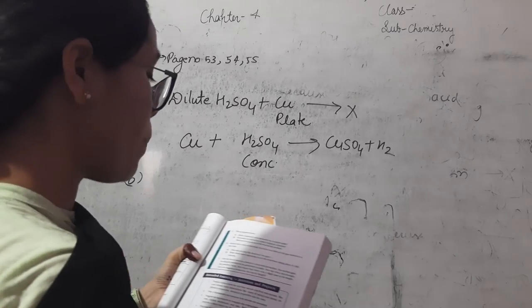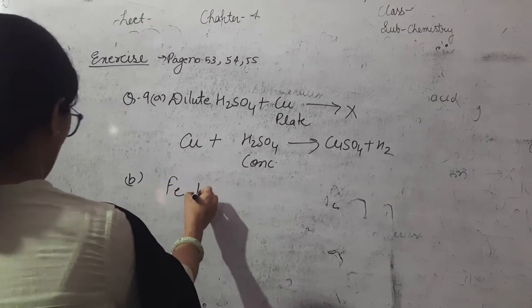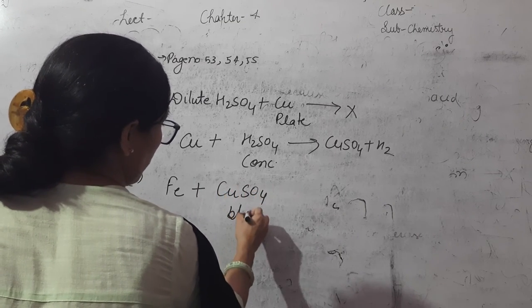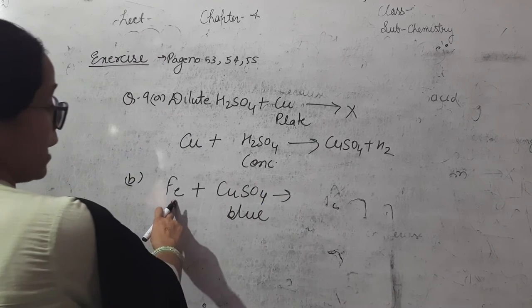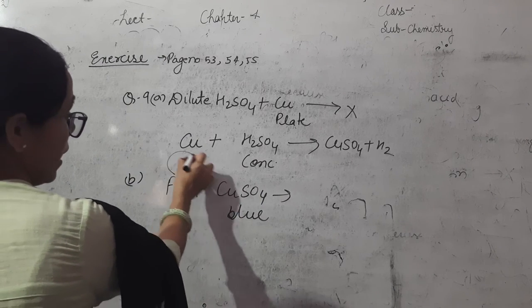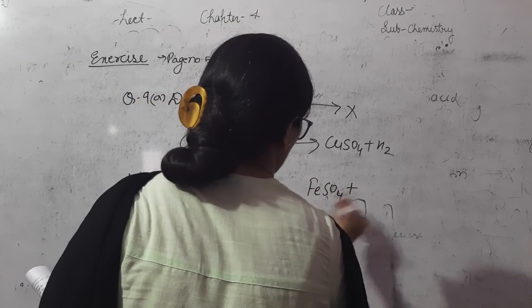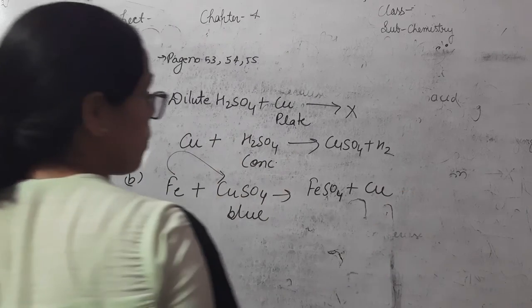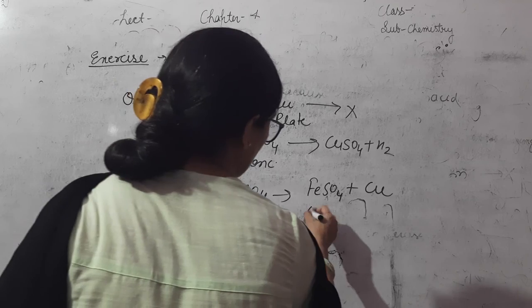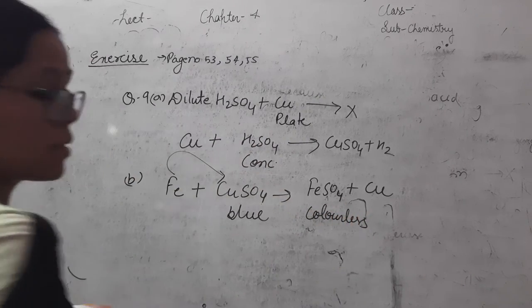B: Iron nails are placed in copper sulfate solution. Fe is added in CuSO4 solution which is blue in color. When we add iron in copper sulfate solution, iron is highly reactive metal, it displaces copper and converts into FeSO4 ferrous sulfate and displaces copper metal. Iron is highly reactive metal, it displaces copper from copper sulfate, so the solution becomes colorless.